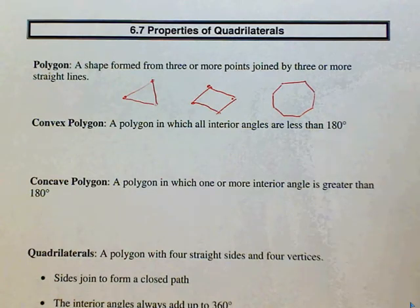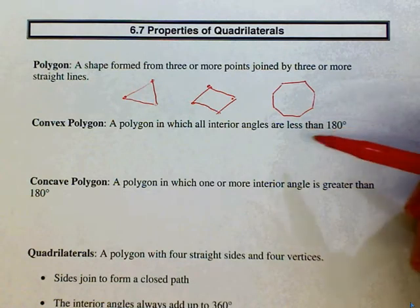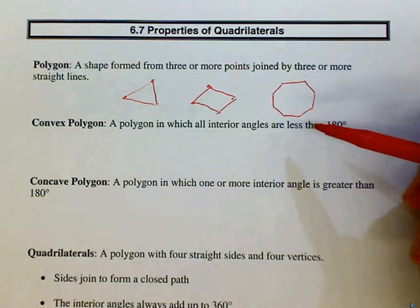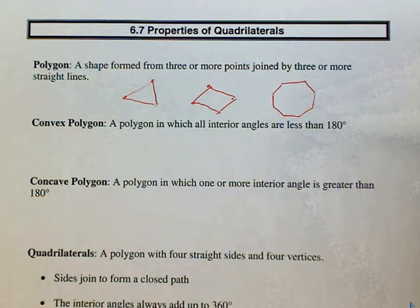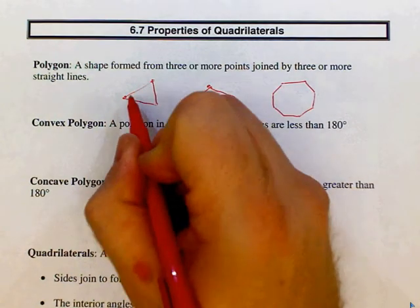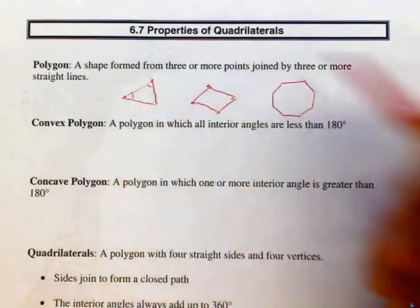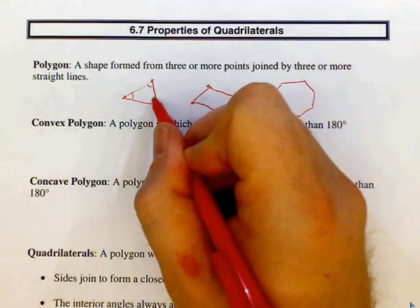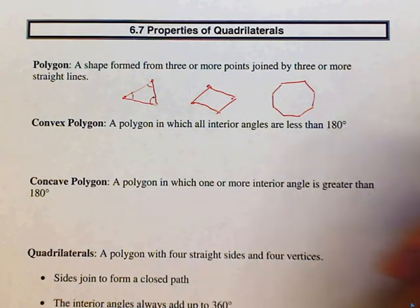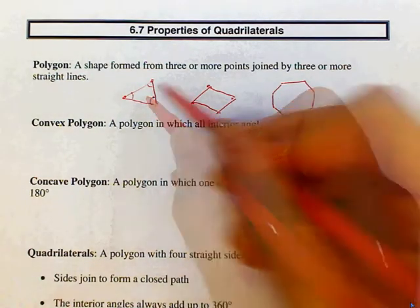Convex polygon. A convex polygon is a polygon in which all interior angles are less than 180. So let's look at our triangle. That angle is less than 180. That angle is less than 180. That angle is less than 180. So this is a convex polygon.